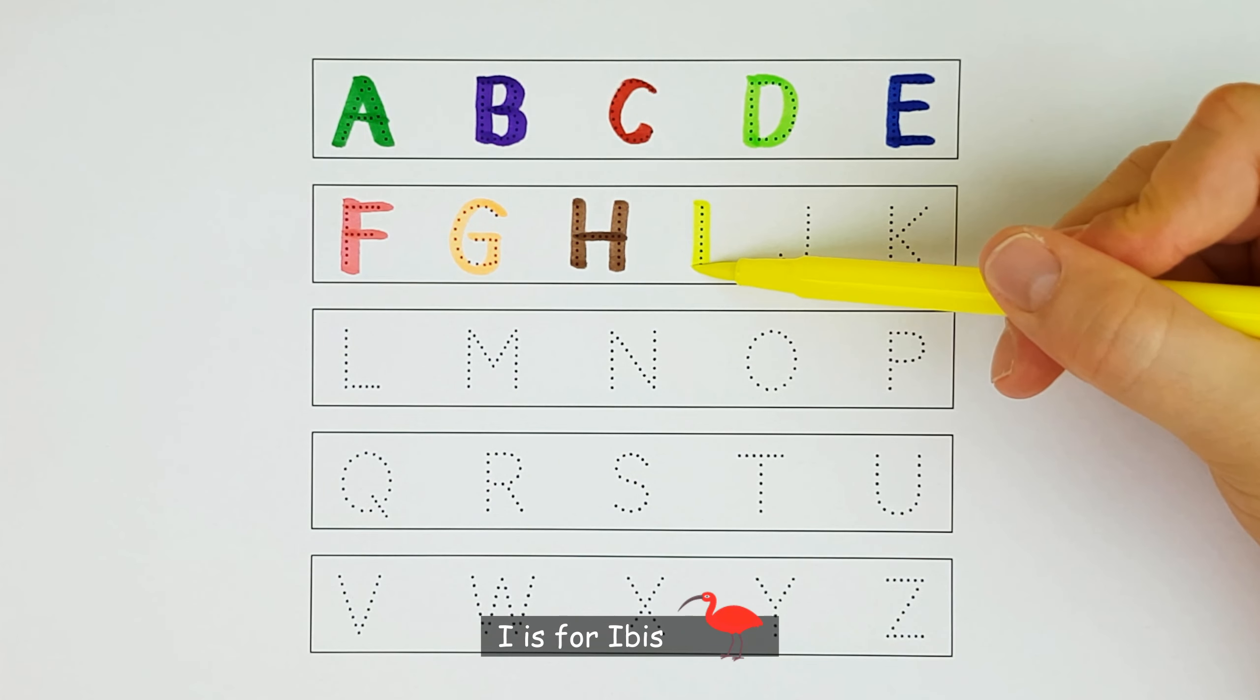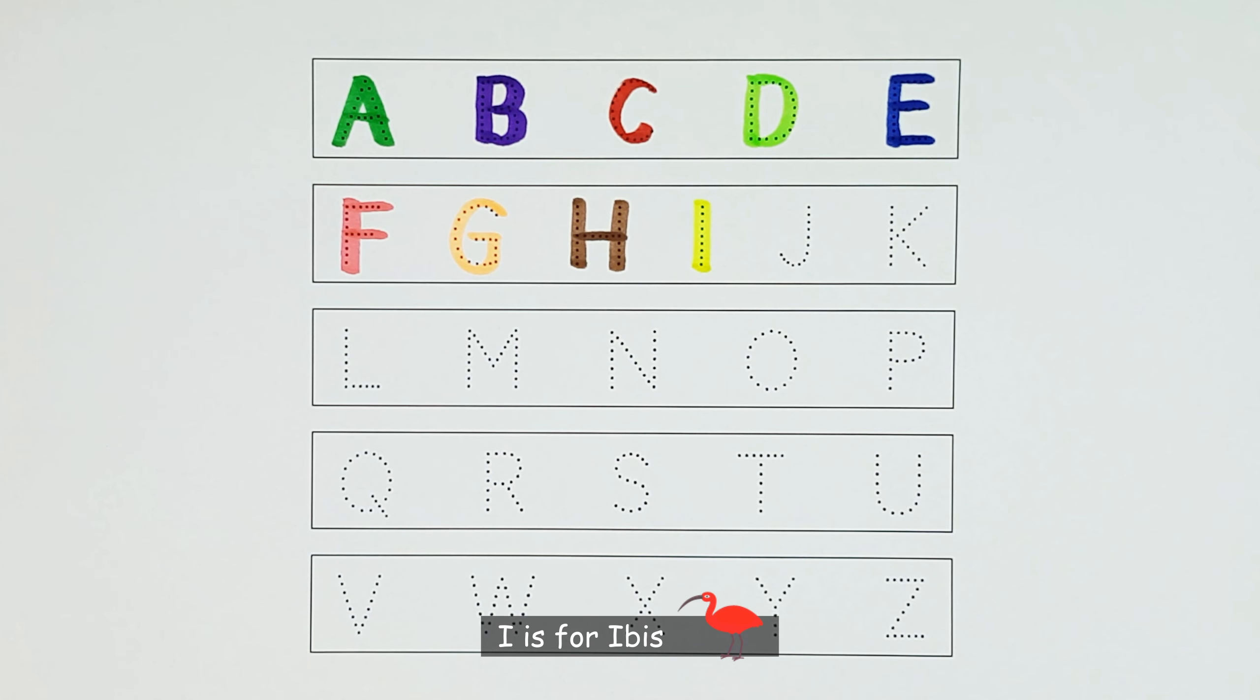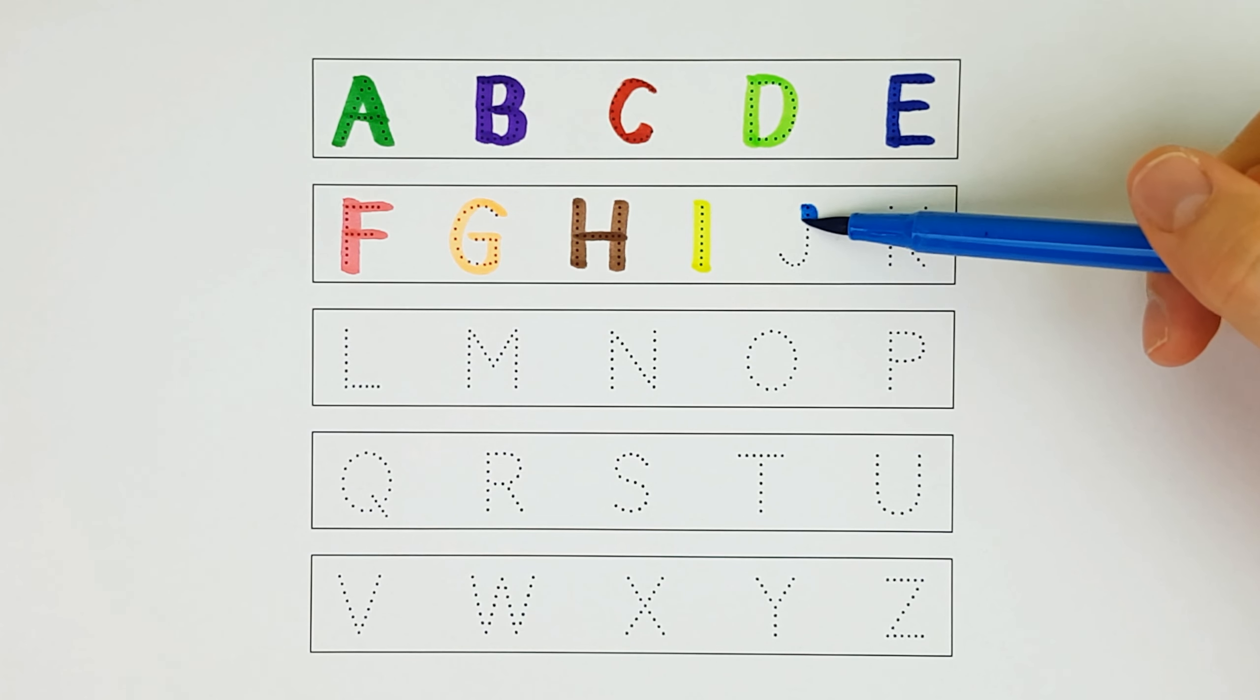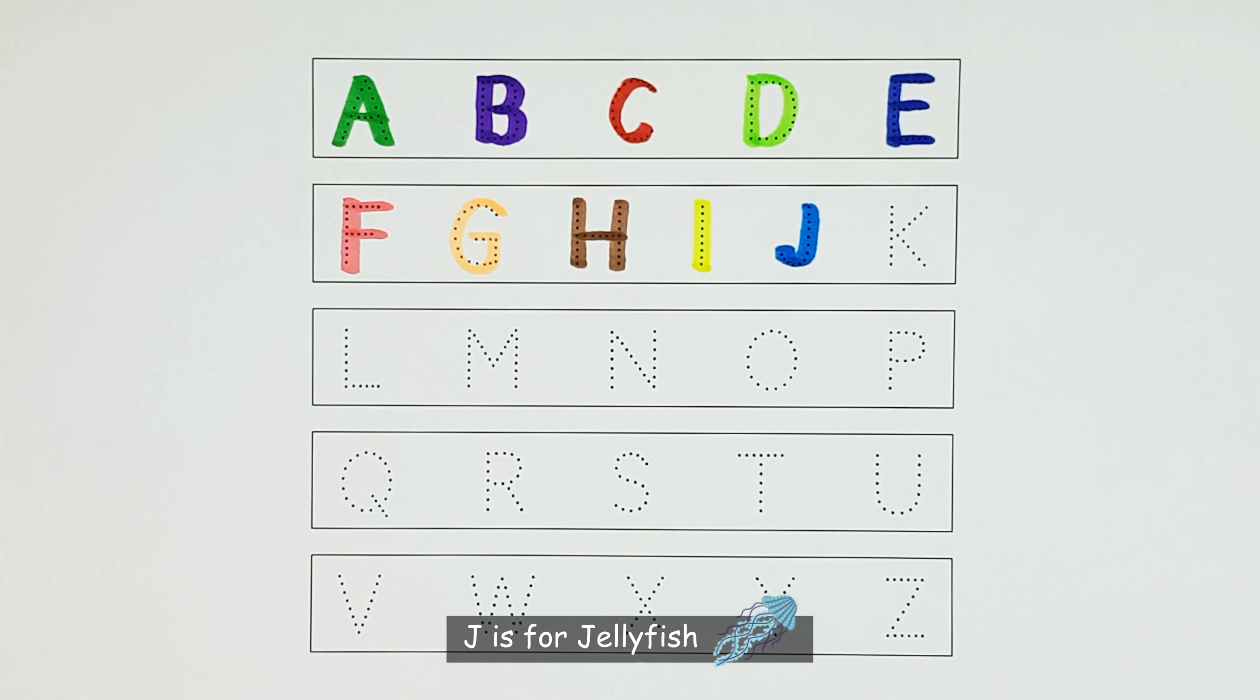I. I is for ibis. I. J. J is for jellyfish. J.